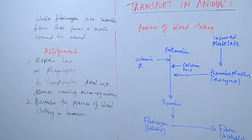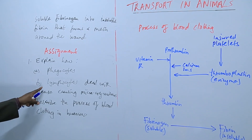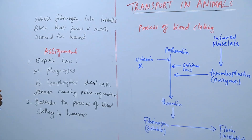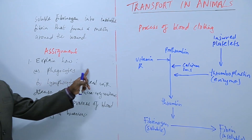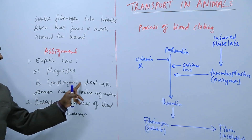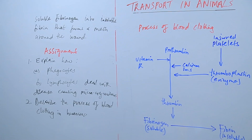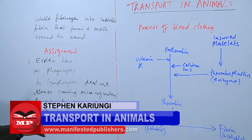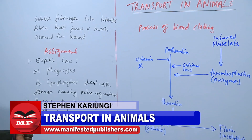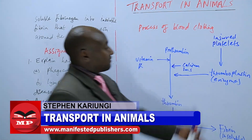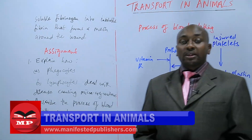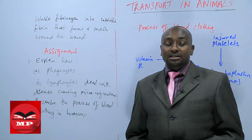The assignment: first question — explain how phagocytes and lymphocytes deal with disease-causing microorganisms. You explain separately how each type deals with them. Number two — describe the process of blood clotting in humans as we have explained it. Until next time, goodbye.